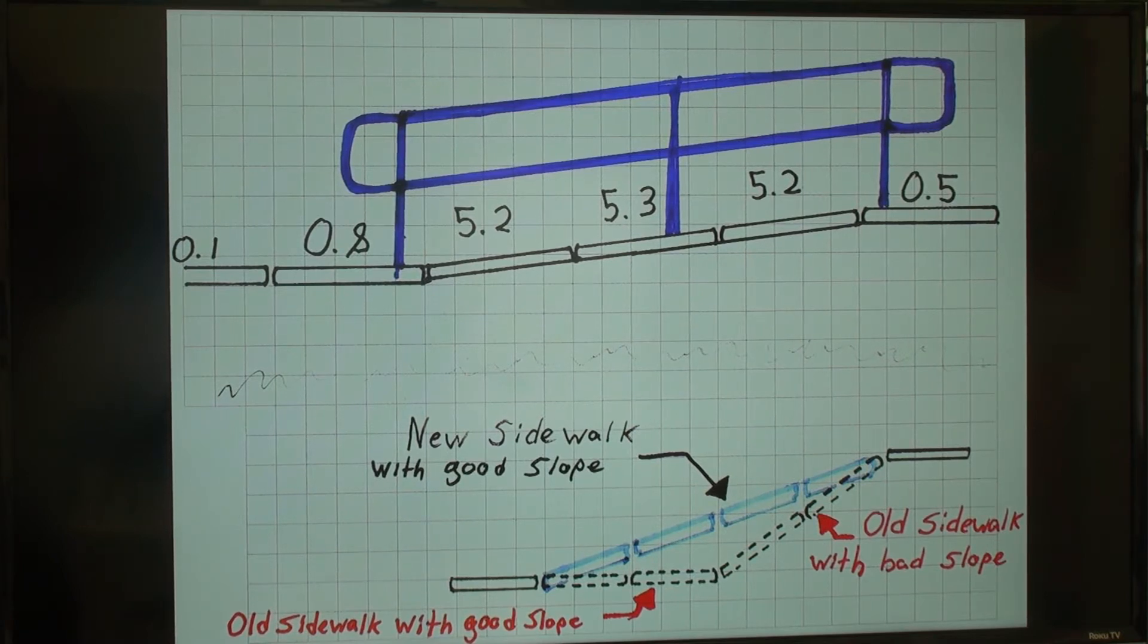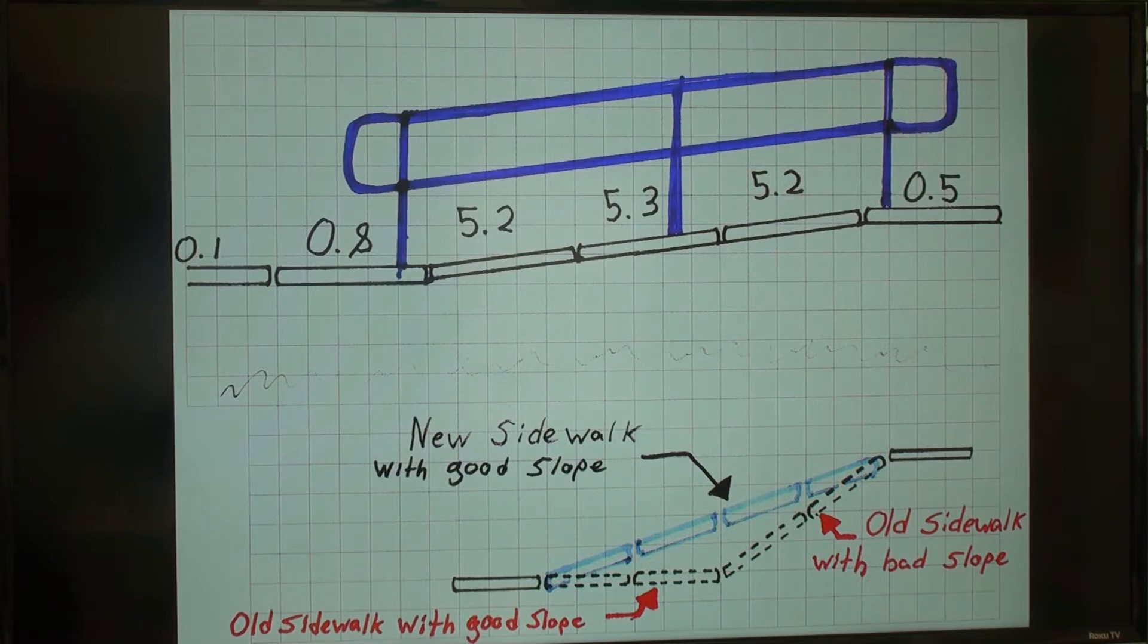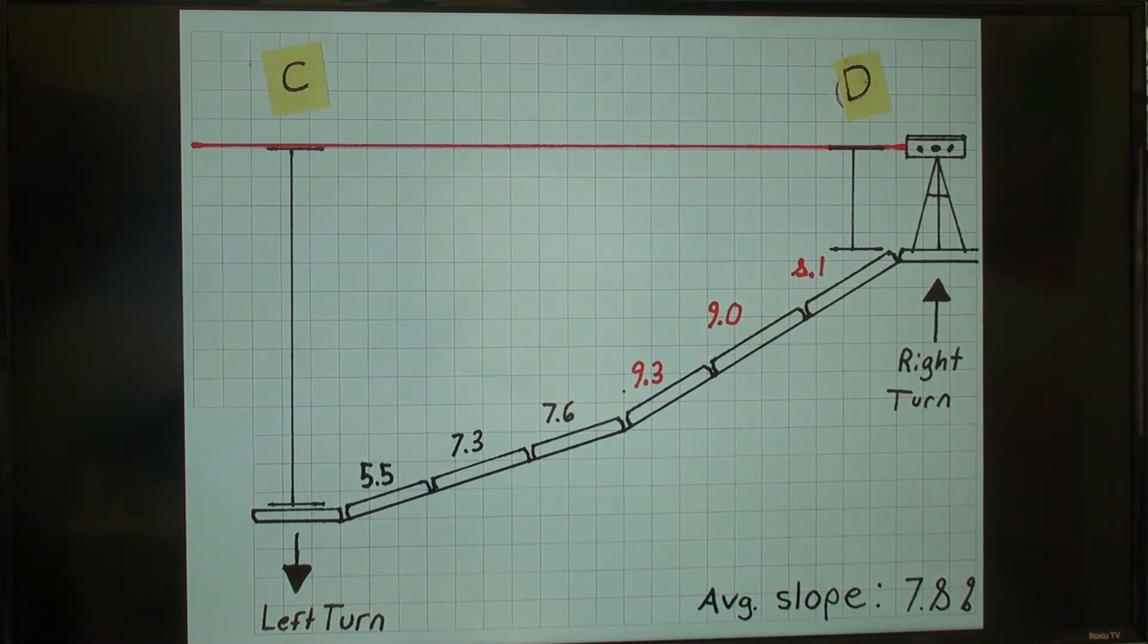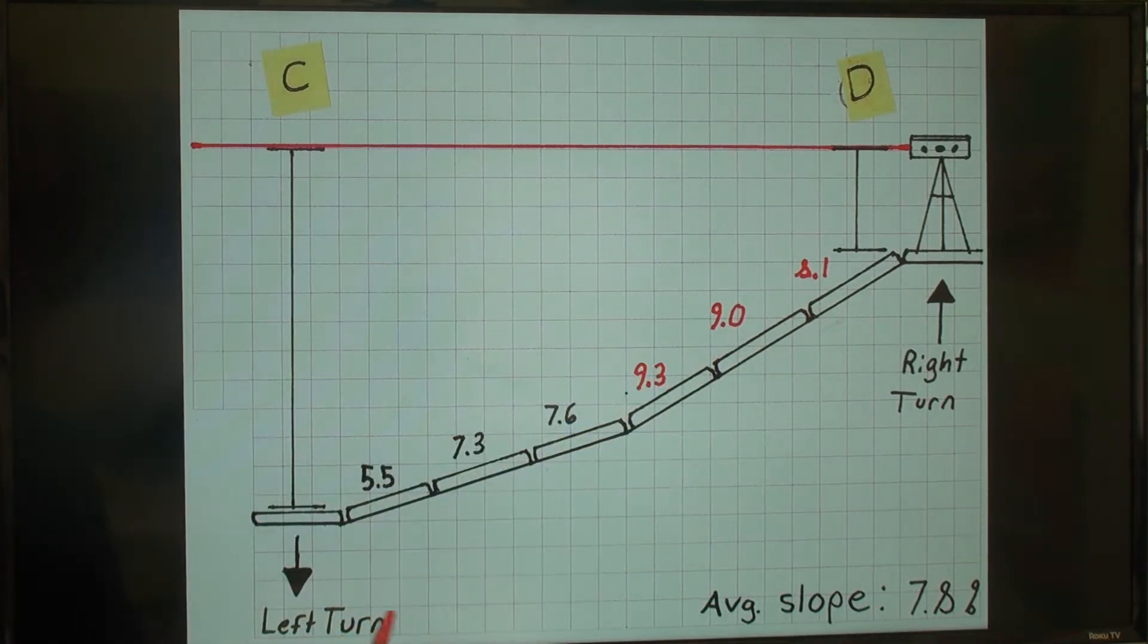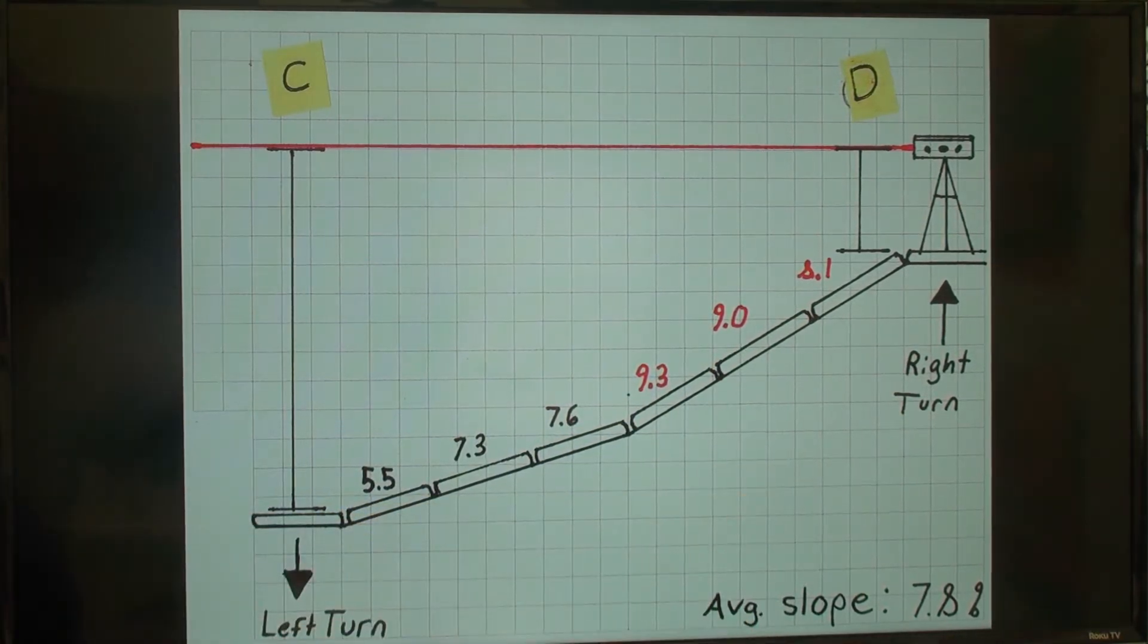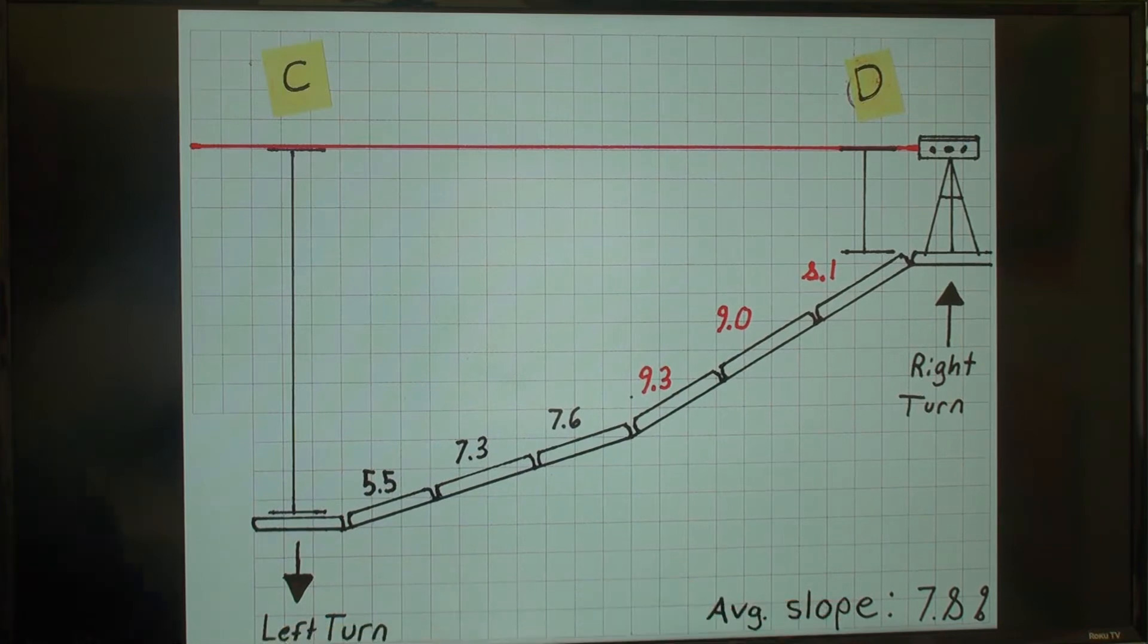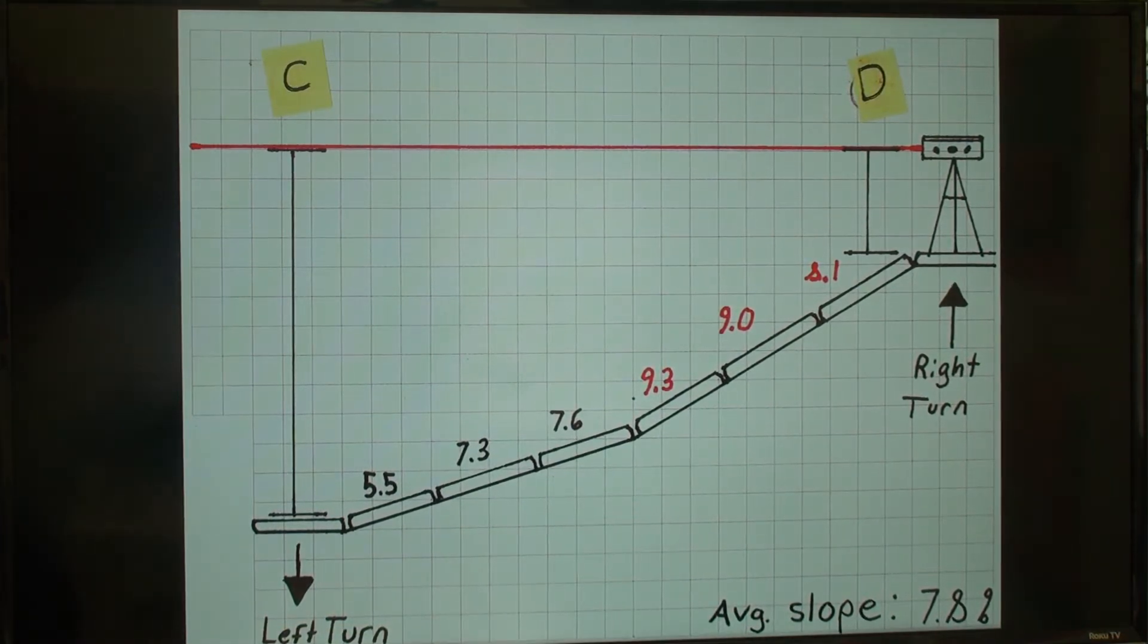Let's discuss another scenario where we will use math to determine how to change the sidewalk and if demo is necessary. Here, we have 6 panels with excessive slope. As you can see, the left and right panels are turning points in the sidewalk, which we cannot demo without causing extra problems. Notice on the right, I have already calculated the average slope to be 7.8%. There is no way to have a sloped sidewalk with numbers as high as these and so little space to work with.